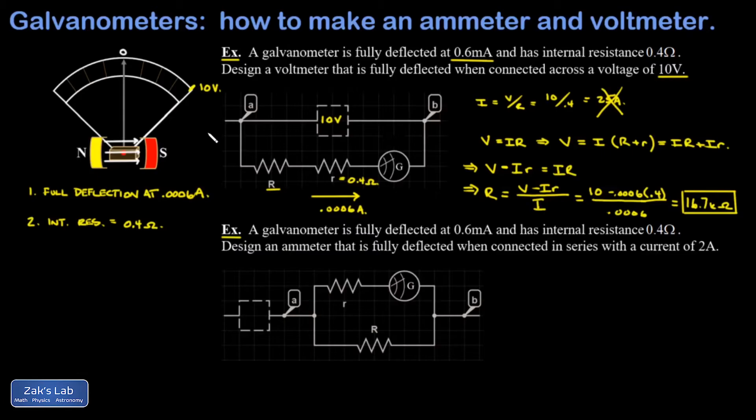One final comment on voltmeter design is we want it to interfere very little with the actual circuit that we're trying to study, and so voltmeters have enormous resistances. We have 16.7 kiloohms in there, which means we're barely drawing any current, 0.0006 amps, so we're affecting the circuit that we're trying to study as little as possible.